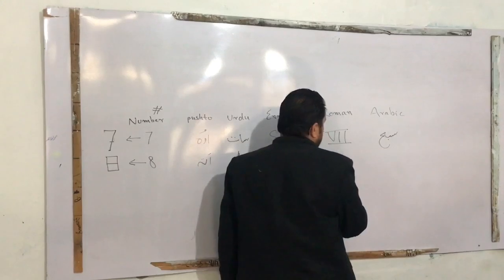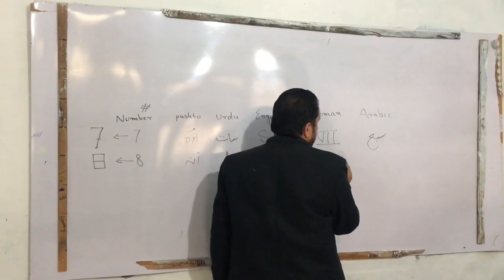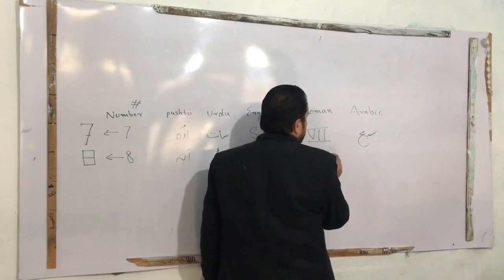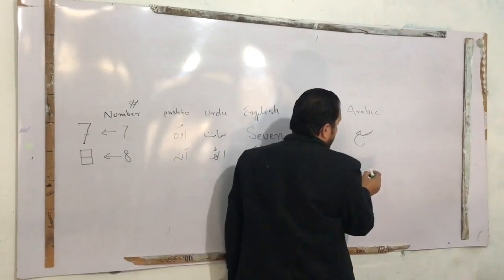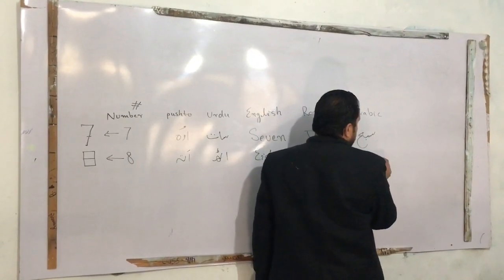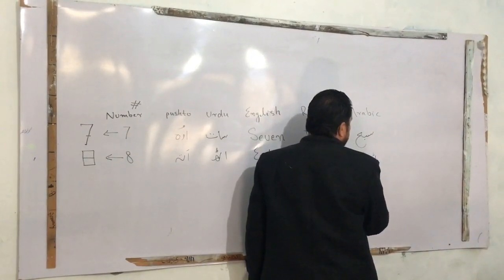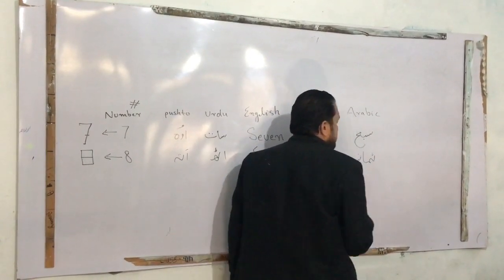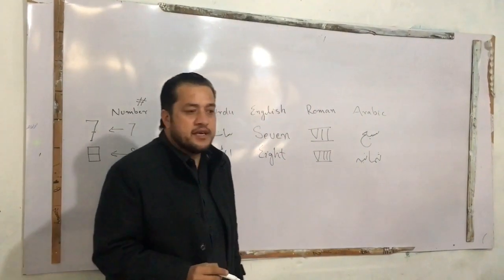In English: eight. In Roman numerals, which is triple I — three. In Arabic, the word is 'Tamania.' Tamania. You say Samania? No, it is Tamania.